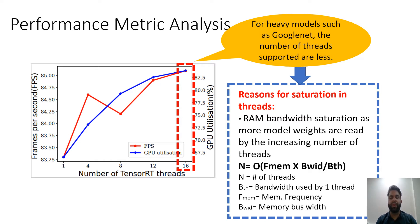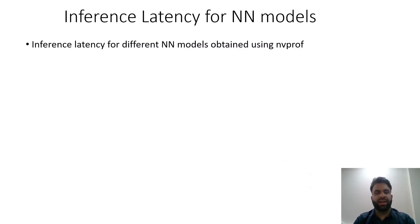The reason for thread saturation is RAM bandwidth saturation: as you increase the number of threads, more weights have to be fetched from main memory. We have an equation that gives the upper bound on the number of threads supported on a particular board: N = O(f_max × memory bus width / bandwidth used by one thread).